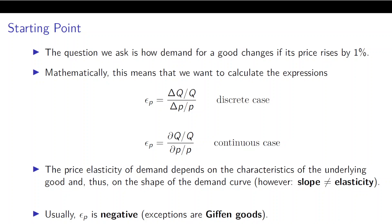From a mathematical perspective this means we want to calculate two expressions. If we have discrete changes, it's the change in quantity in percentage terms in the numerator divided by the percentage change in the price in the denominator. If we have continuous or marginal changes, the same expression would be the derivative of the demand level divided by the demand level — that's the percentage change in the continuous case — divided by the percentage change of the price level.